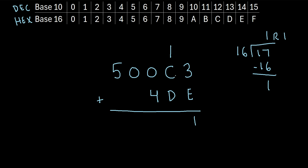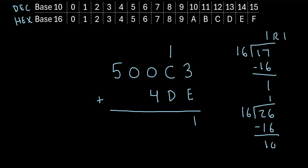Now we have 1 plus C plus D. C is 12, so 1 plus 12 is 13. D is 13. So we really get 13 plus 13, which is 26. The hexadecimal system doesn't go up to 26, so we use our trick: how many 16s go into 26? Just 1. So 1 times 16 is 16. Then 26 minus 16 is 10, so our remainder is 10. In the hexadecimal system, 10 is an A. So we write an A right here, and the whole number 1 is carried over to the next column.